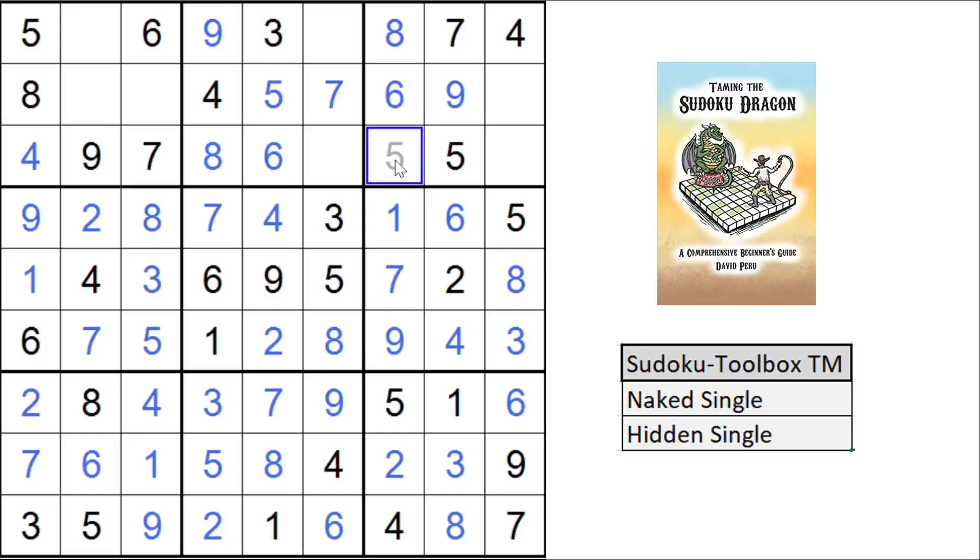And now we have a naked single right here. We're missing a 3. And what I like to do is if I solve one, I'm going to start doing it looking left, looking right, looking up and down. So 3 and 3 and 3 means this is the last 3. And all the 3s are solved.